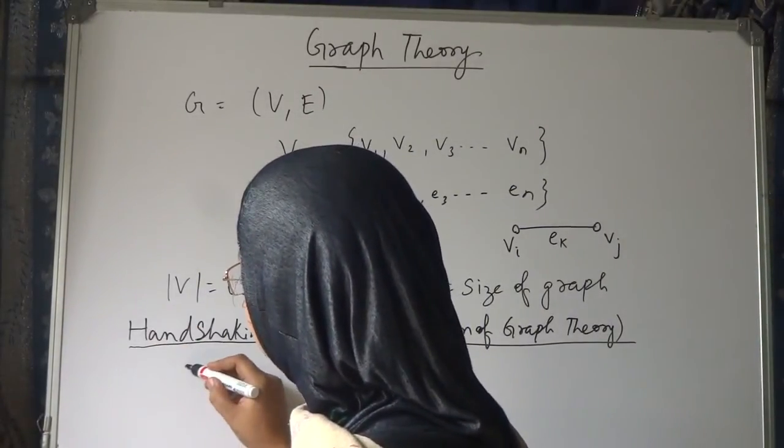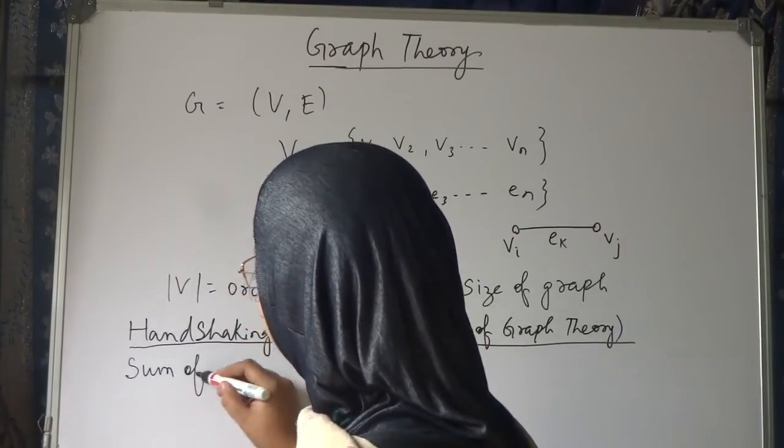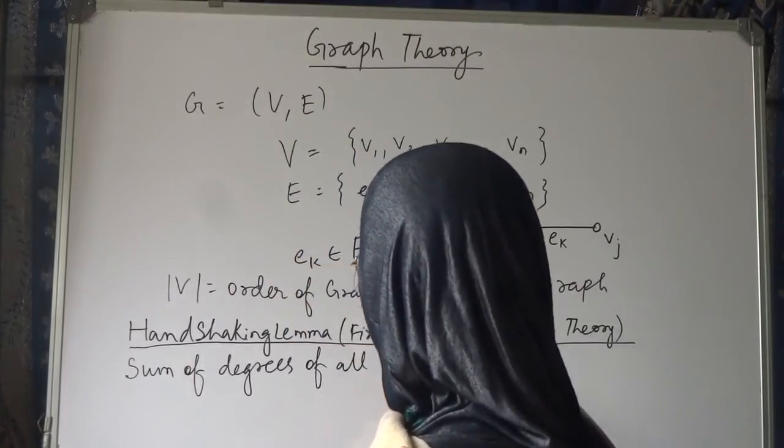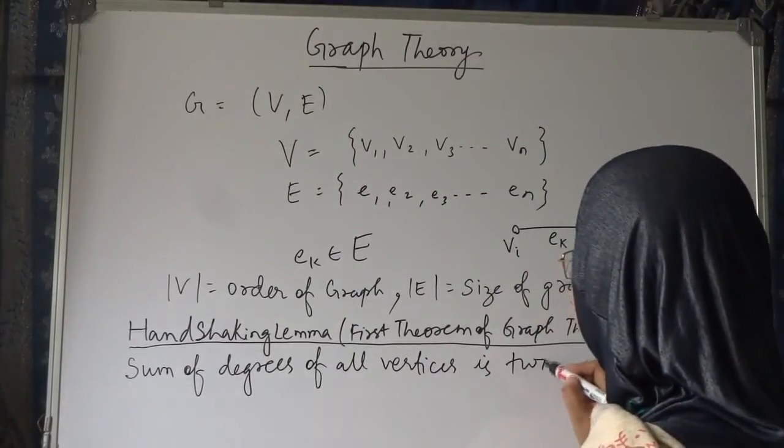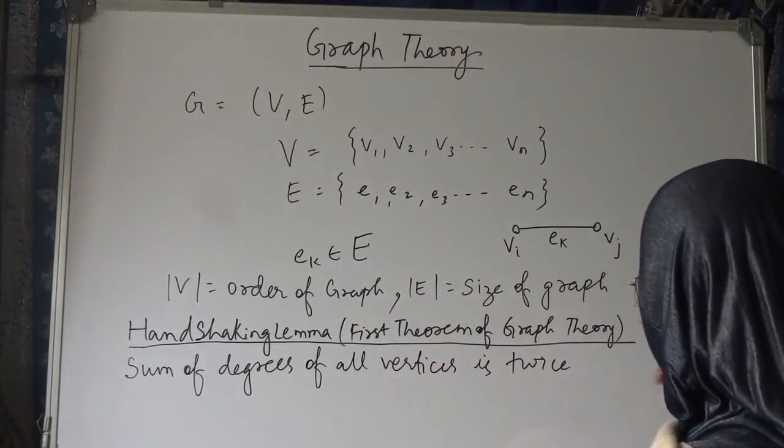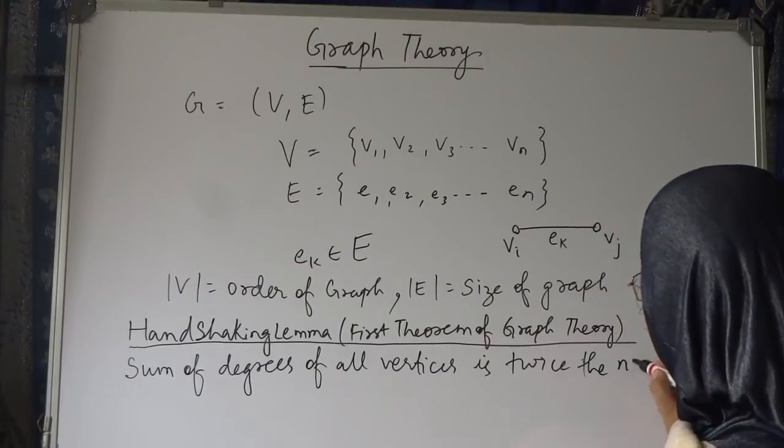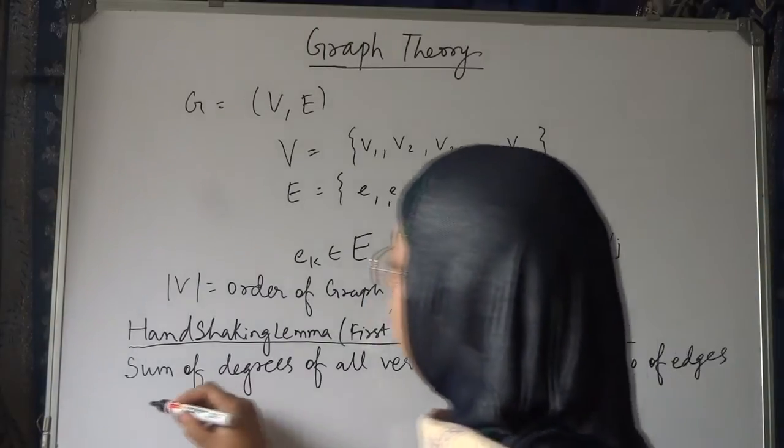The sum of degrees of all vertices is twice the number of edges in the graph.